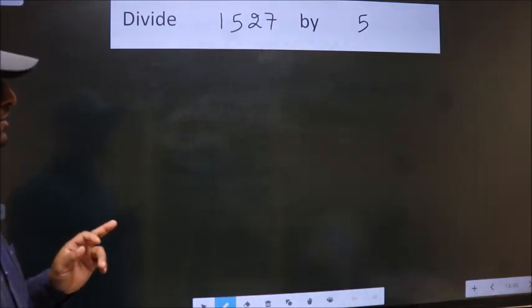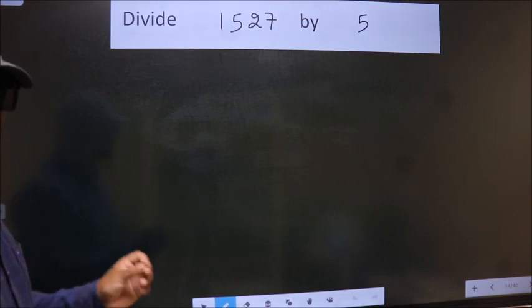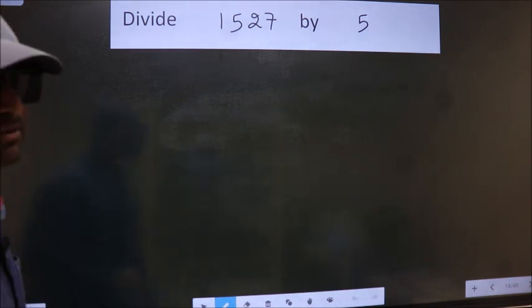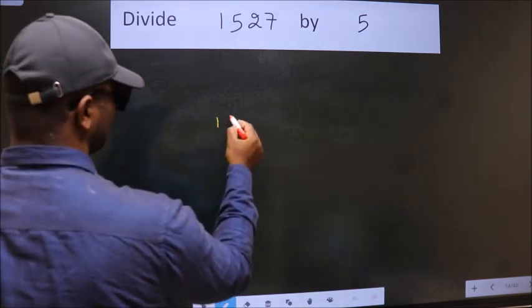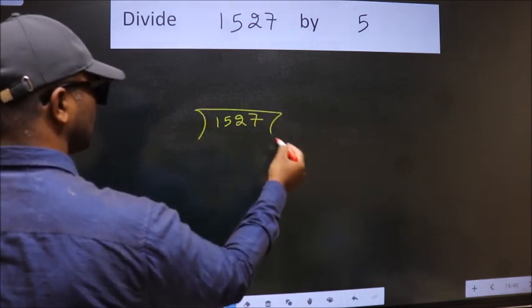Divide 1527 by 5. To do this division, we should frame it in this way. 1527 here. 5 here.